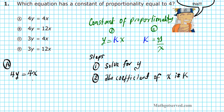To find the constant of proportionality here, we solve for y — get y by itself. We divide both sides of the equation by 4, because we have 4 times y and to undo multiplication you divide. So y equals 4 divided by 4, which is 1x. The constant of proportionality is whatever you're multiplying x by, so for a, k is equal to 1. That's not what we want — we're looking for a constant of proportionality of 4, so a is not the answer.